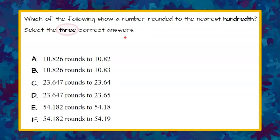Welcome back. So we first need to understand that we're selecting three correct answers out of these six answer choices. Now we need to understand that we are taking the numbers and we're rounding to the nearest hundredth.